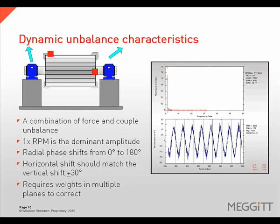Dynamic unbalance is a combination of force unbalance and couple unbalance. The dominant vibration amplitudes will occur at 1 times rotational speed. Radial phase readings will be unsteady from 0 to 180 degrees. The horizontal phase shift should match the vertical phase shift. Dynamic unbalance will require a multi-plane balance weight placement to correct.